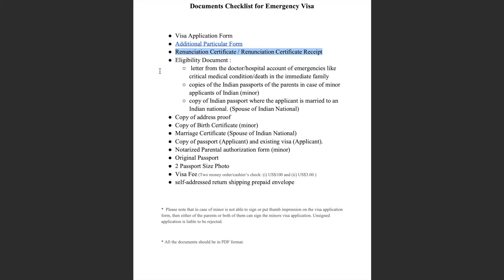If you have applied for a renunciation certificate, you have to submit the renunciation certificate receipt. If you acquired US citizenship by birth, there is no need for a renunciation certificate. Next is the eligibility document — first is a letter from a doctor or hospital indicating the medical condition of your immediate family. If you are applying for a minor, provide the Indian passport of both parents. If you are applying as a spouse of an Indian national, provide the Indian passport of your spouse.